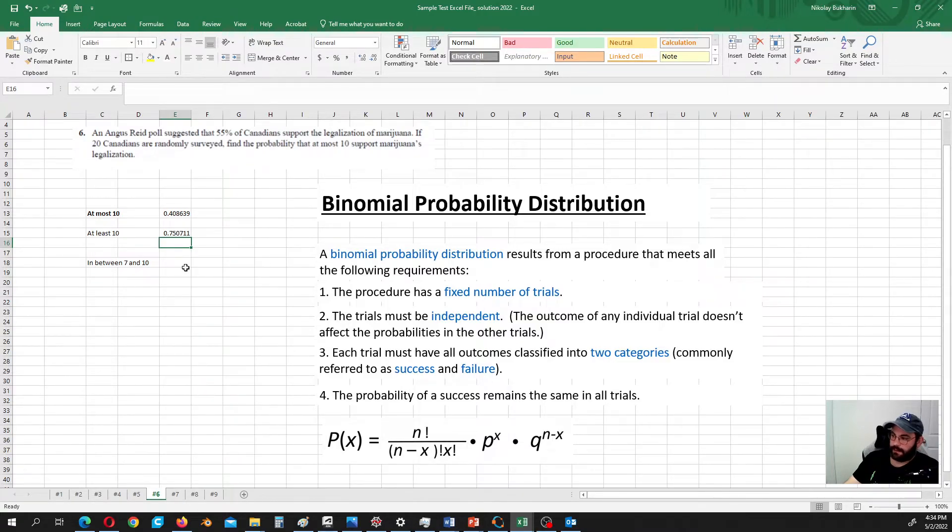Okay. In between 7 and 10. Yeah. In between 7 and 10. So in this case we need to take, if we want to include 7 and 10, so we need to take binomial distribution from 10 and to the left and then subtract from 6 and to the left. So then we are going to be left with 7 to 10.